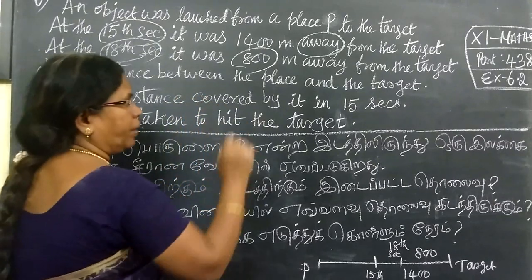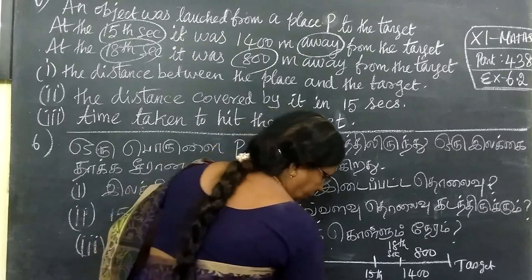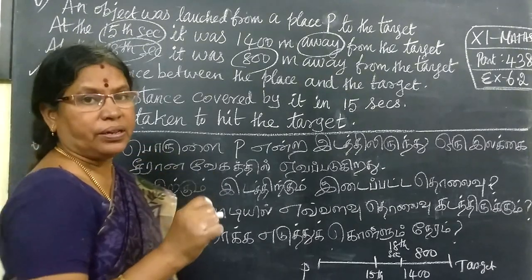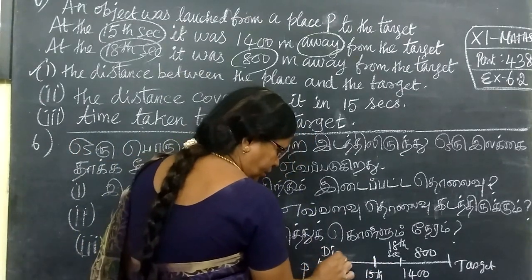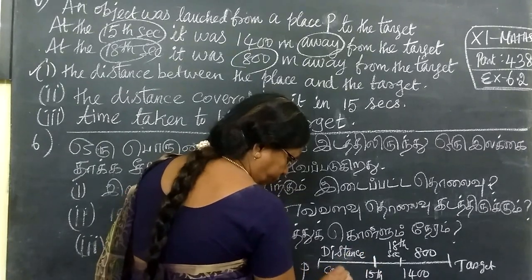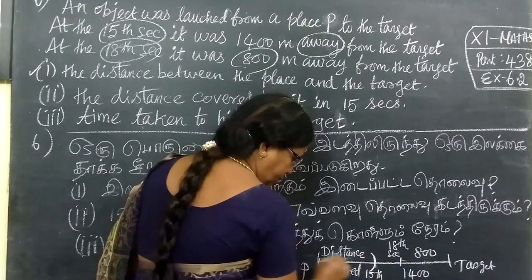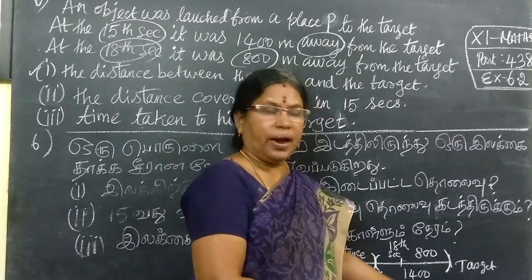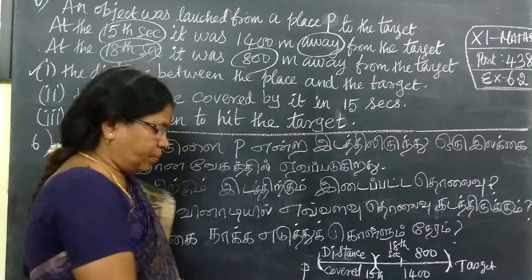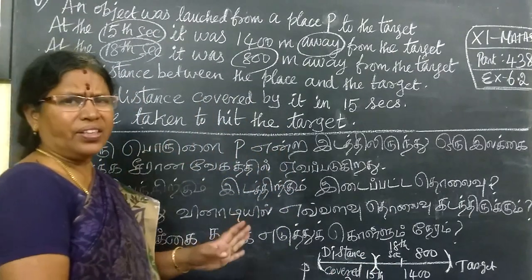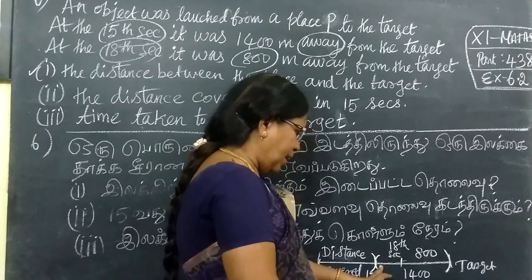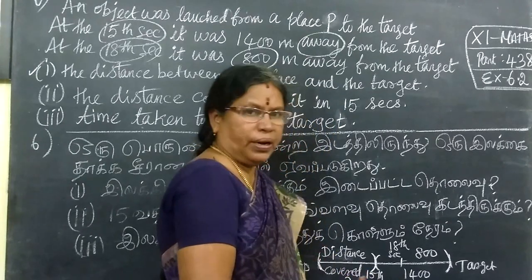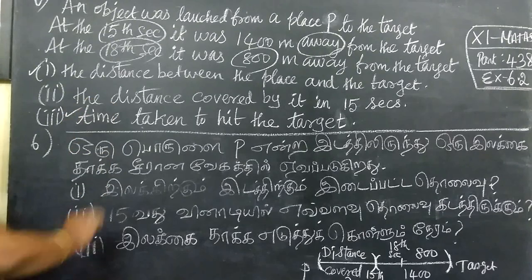The distance between the place and the target - this is the total distance. The time taken to hit the target.